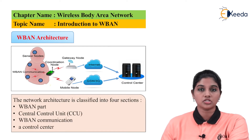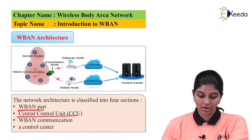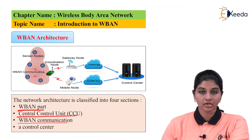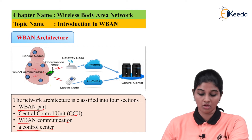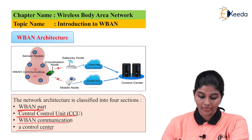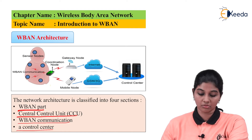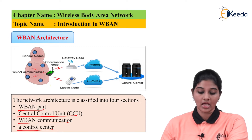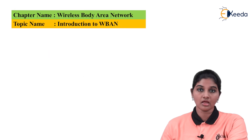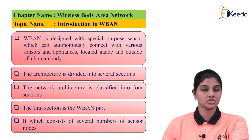Now let's look at the architecture of wireless body area network. The architecture is divided into four different parts: the wireless body area network part, the central control unit (CCU), wireless band communication, and a control center. From the diagram, the sensor nodes form the wireless body area network part, the central control unit is present, then wireless communication takes place using an access point and the internet, and at the end the control center is present.